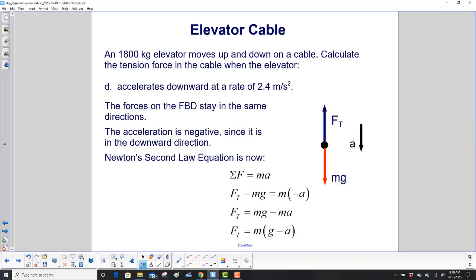The last part of the problem: we're accelerating downward at a rate of 2.4 meters per second squared. This free body diagram stays the same except the acceleration is now down. My sum of the forces is still tension minus mg equals m times a. It's in the down direction, so we give it a negative. On the next line we added mg to both sides, so we cancelled out the mg and it wound up over here. We multiply m times minus a and get minus ma. One more time we factor out the mass and have tension equals m(g - a).